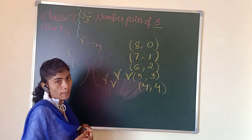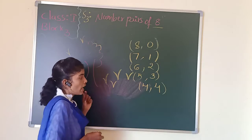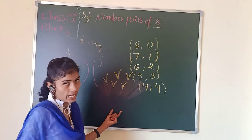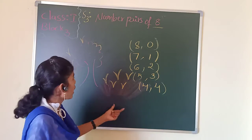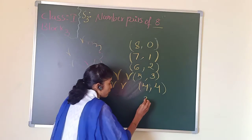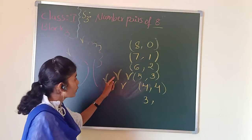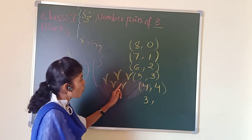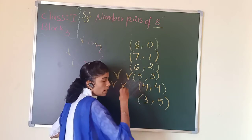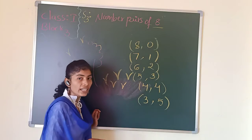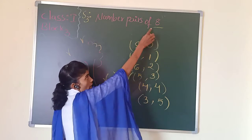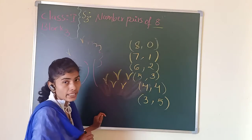Now how can we write another pair? We can remove 1 from the tree and add 1 more monkey on the grass. Count the tree: 1, 2, 3. And the grass: 1, 2, 3, 4, 5. So 3 comma 5 is also a number pair for 8.